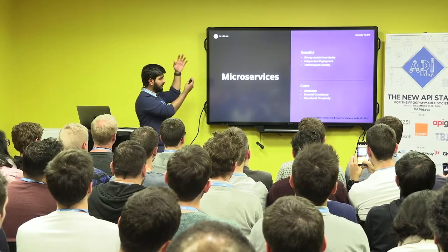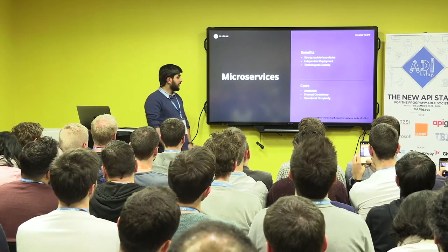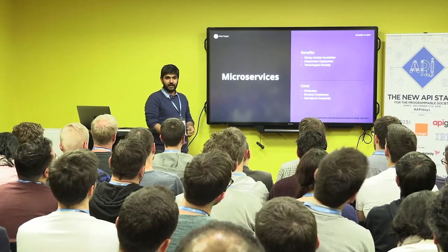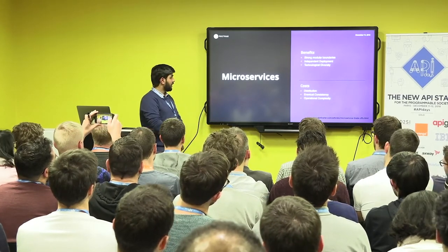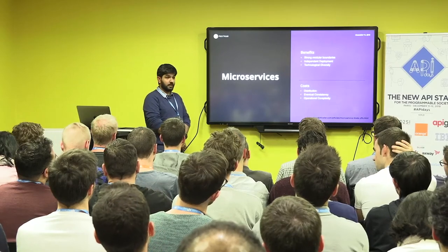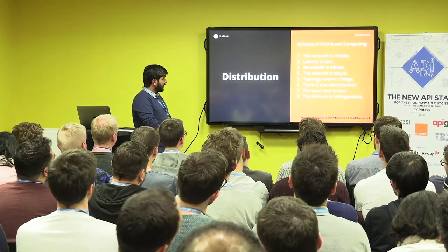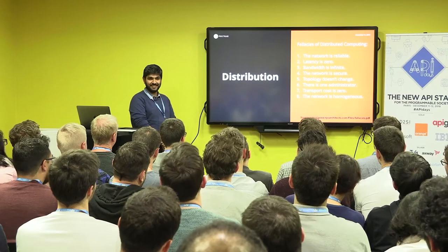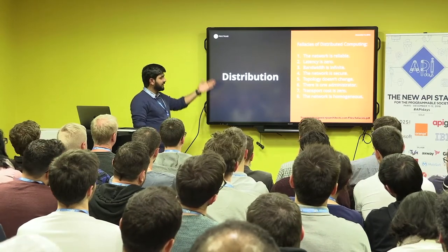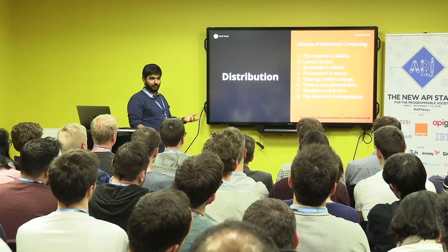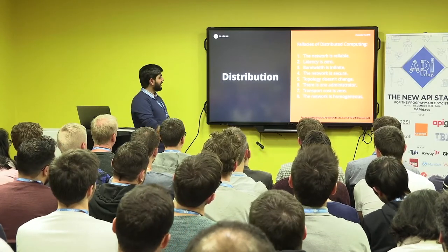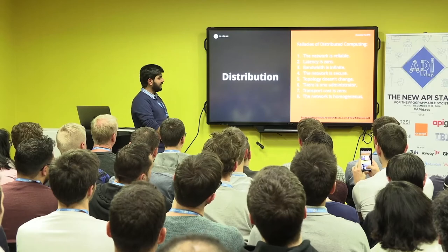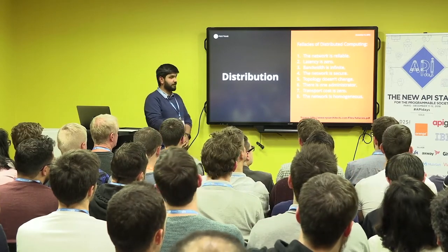Looking only at the benefits, it just made sense. But if you talk about the costs of building distributed systems that are eventually consistent and require a really mature operations team to roll them out, this problem compounds really quickly. Distributed computing has a few fallacies — this comes from a paper published in 1996 — which talks about all the assumptions that distributed systems assume to be true. However, Murphy's Law — what can fail, will fail — means none of these things in production systems turn out to be true.